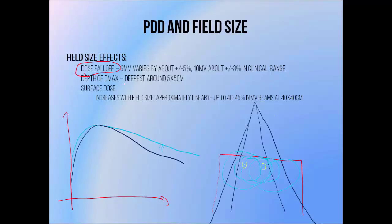To recap the effect of field size on the depth of maximum dose: it tends to be deepest in fields of around 5x5 cm. In smaller field sizes it becomes shallower due to decreased phantom scatter resulting in less dose deposited at depth, and in bigger field sizes it becomes shallower due to increased collimator scatter resulting in more dose deposition at shallower depths. A 5x5 cm field produces the greatest depth of maximum dose because it's the size at which these two effects balance out.